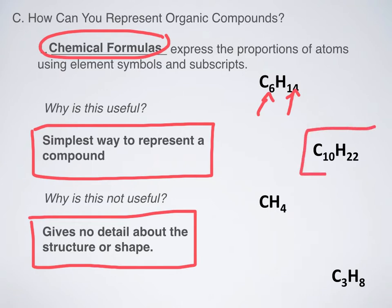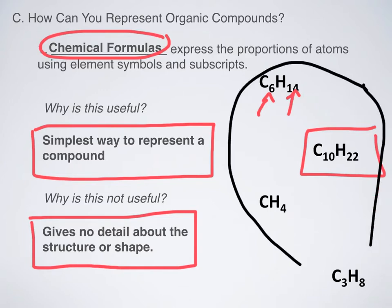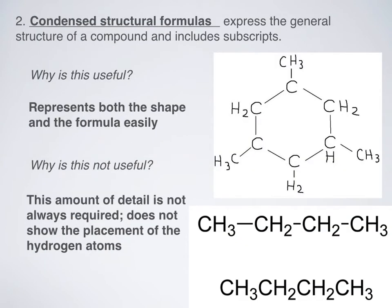We don't really use chemical formulas for the most part when dealing with organic compounds, because a given chemical formula could actually represent a variety of different shapes — quite a few different compounds can share that chemical formula. Next up, we have the condensed structural formula. That expresses the general structure of a compound and includes subscripts — it gives you the shape, but not all of the detail.